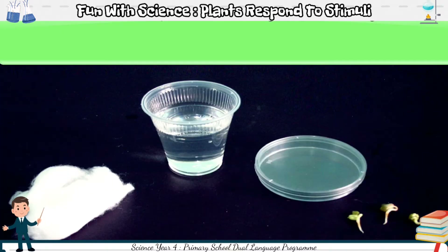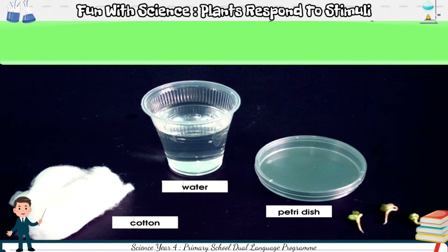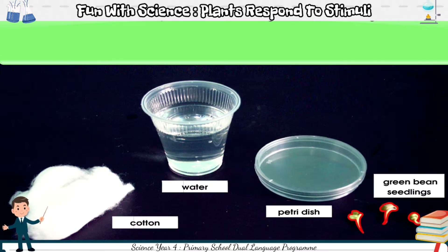I need some cotton, water, a petri dish, and 3 green bean seedlings.